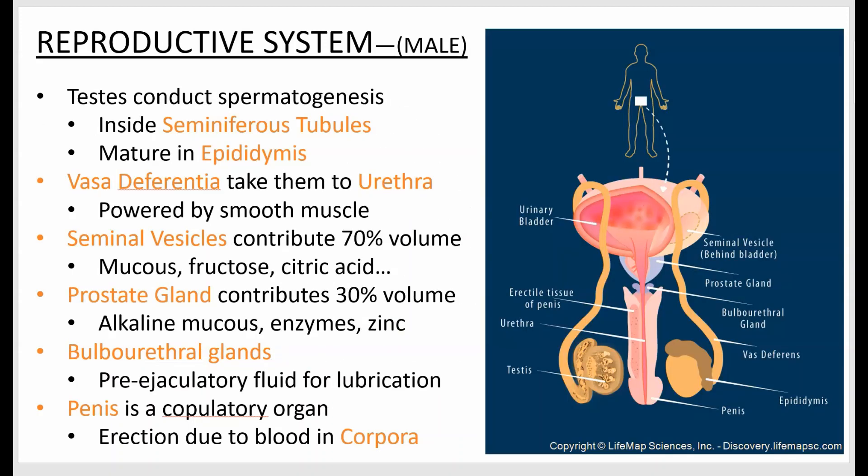We'll start with the male. Here's a simple diagram of the male reproductive system — a macro view. The testes are where you make sperm cells, specifically inside tubules called seminiferous tubules, which you'll see later. Then the sperm go on to mature in the epididymis.